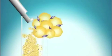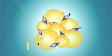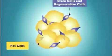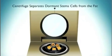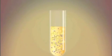The fat is then placed into test tubes. The fat and stem cells are then placed into a centrifuge and spun. This process gently separates the fat and stem cells.